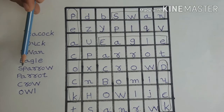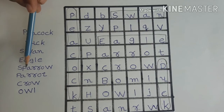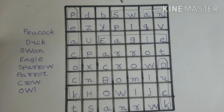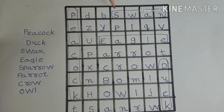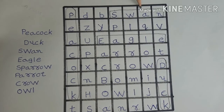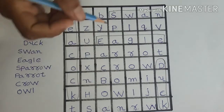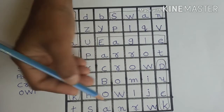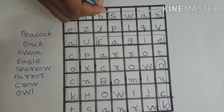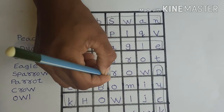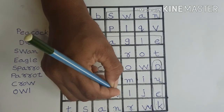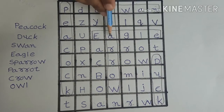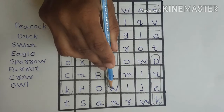Now our next spelling is sparrow — S-P-A-R-R-O-W. Friends, find it here. Where does S appear? Look — S-P-A-R-R-O-W. Let's circle sparrow. S-P-A-R-R-O-W. Sparrow.